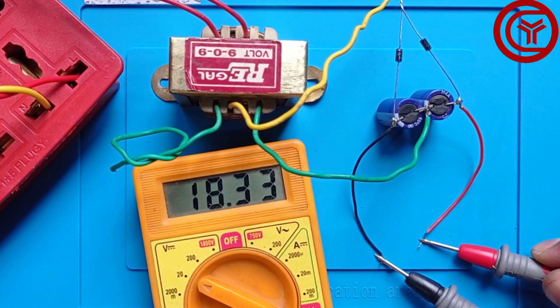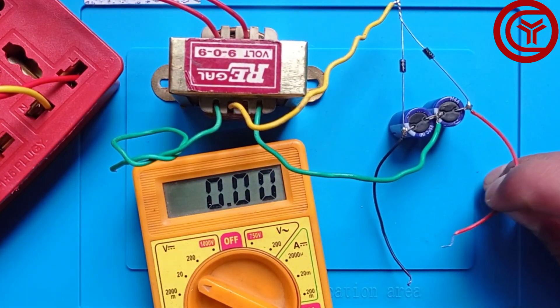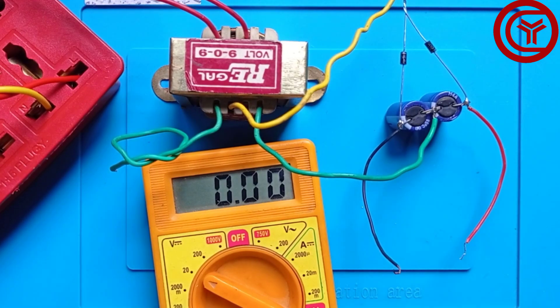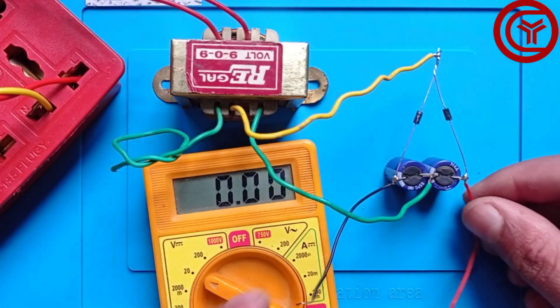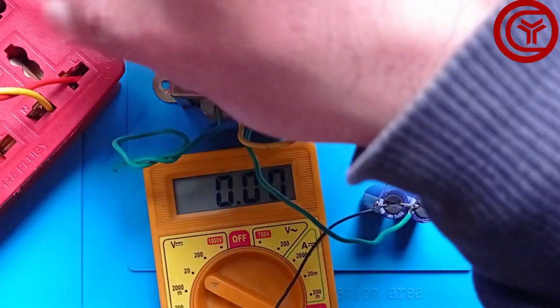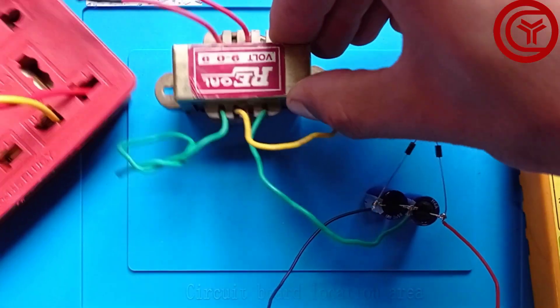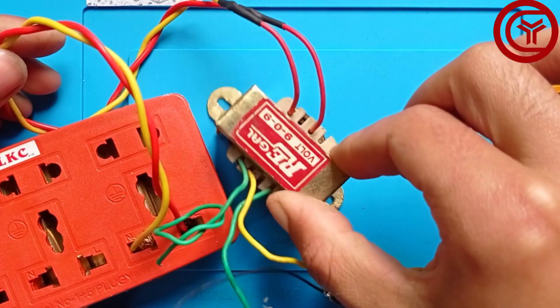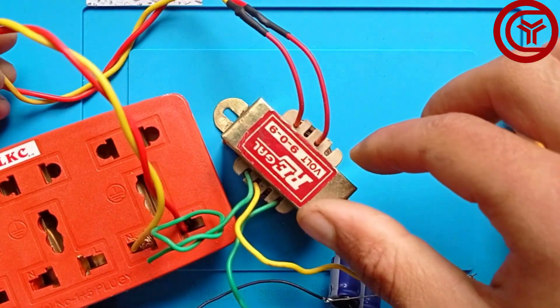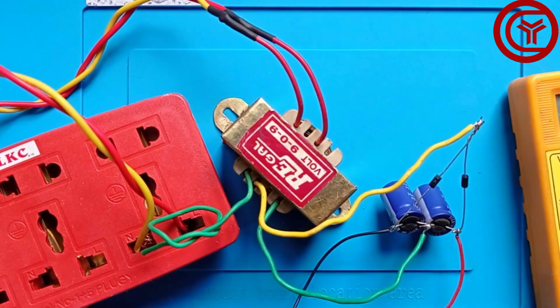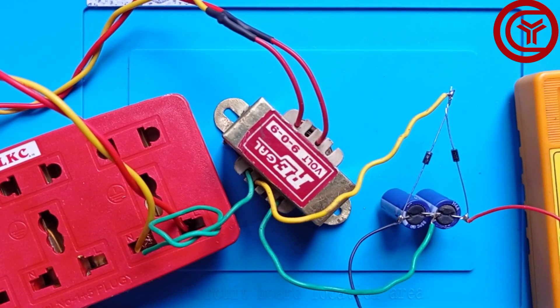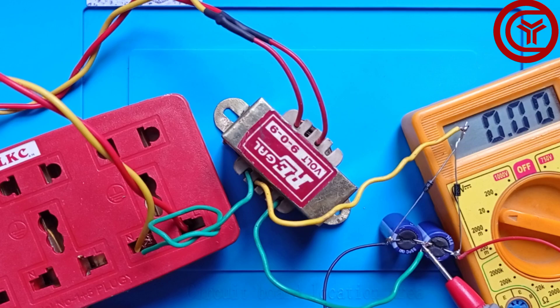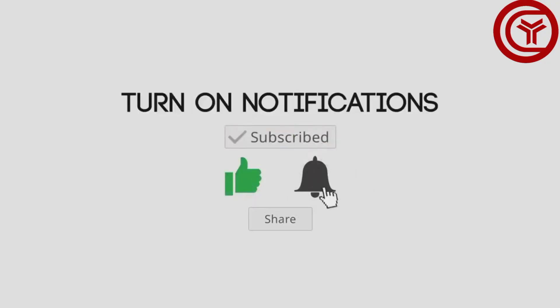This was our complete circuit for this project. As you've seen, we gave 9 volt input and it gave back 18 volts output, successfully doubling the voltage. I also designed a PCB for this project - check the link in the description. Please subscribe for more informative videos like this, give a thumbs up, and turn on notifications for further updates.